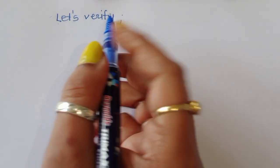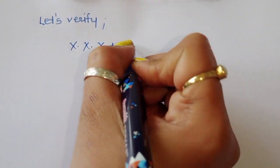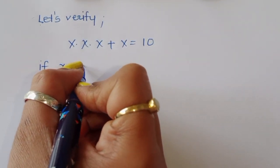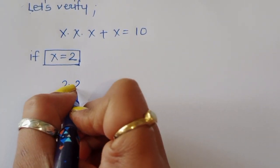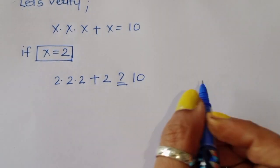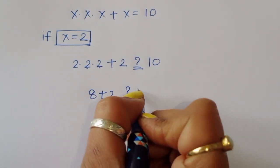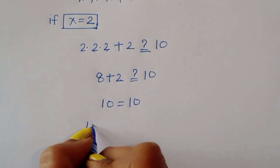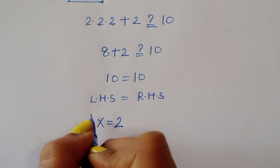Let's verify: the question is x times x times x plus x equals 10. Substituting x equals 2: 2 times 2 times 2 plus 2 equals 8 plus 2 equals 10. LHS equals RHS, so x equals 2 is confirmed as the correct solution.